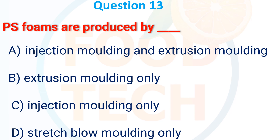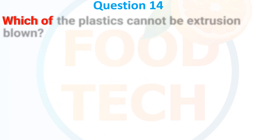PS foams are produced by: (a) Injection molding and extrusion molding, (b) Extrusion molding only, (c) Injection molding only, (d) Stretch blow molding. The answer is (a) Injection molding and extrusion molding.